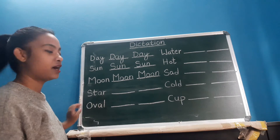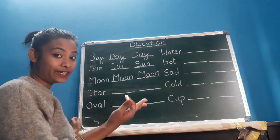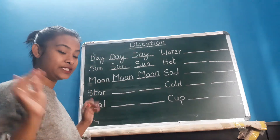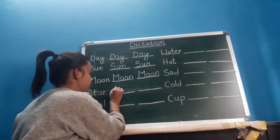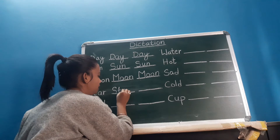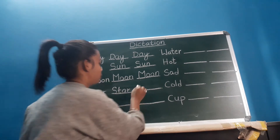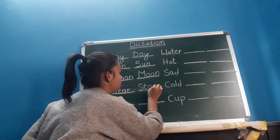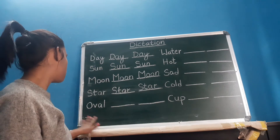Next: S, T, A, R — star. When do we see stars? At night, up in the sky. It twinkles, right? It glitters. S, T, A, R — star. S, T, A, R — star. All right?